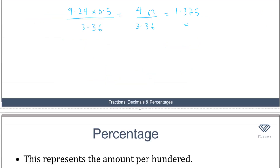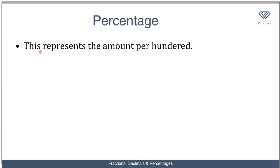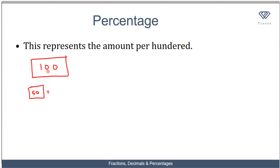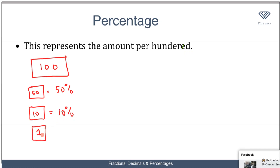Now let's move to percentages. A percentage represents the amount per 100. Imagine something divided into 100 pieces: if I give you 50 of them, I've given you 50 out of 100, which is 50 percent. If I give you 10 out of 100, that is 10 percent. If I give you 1 out of 100, that is 1 percent.